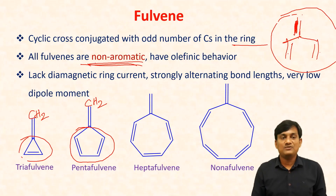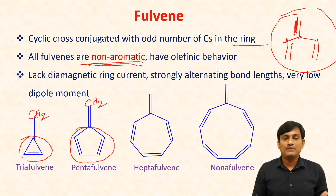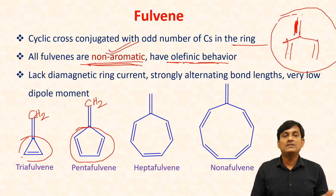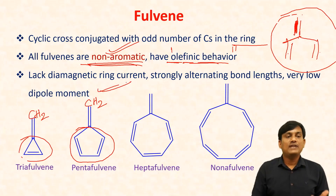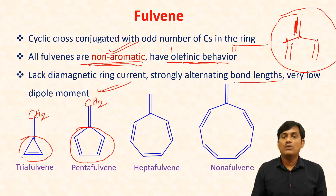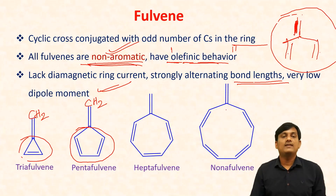Irrespective of the number of pi electrons, all fulvenes — triafulvene, pentafulvene, heptafulvene, nonafulvene — are non-aromatic and have olefinic behavior. They exhibit the properties of a double bond, including electrophilic addition reactions. There is a lack of diamagnetic ring current, strongly alternating bond lengths, and very low dipole moment. Due to lack of both diamagnetic and paramagnetic ring current, these are neither aromatic nor anti-aromatic — they are non-aromatic. The double bond length is different from the single bond length, and there is a huge difference between them.